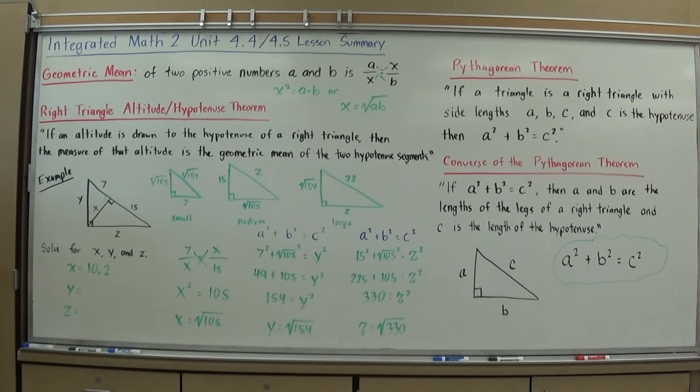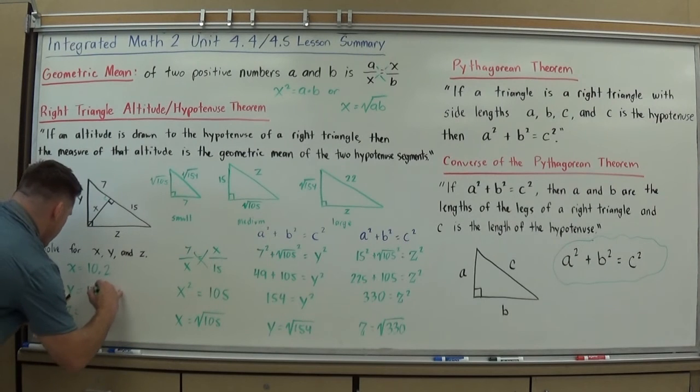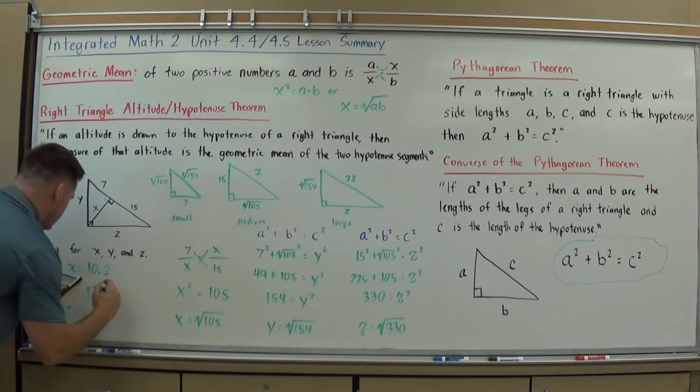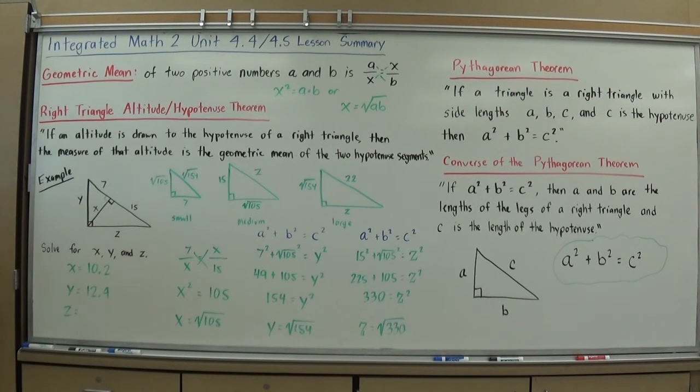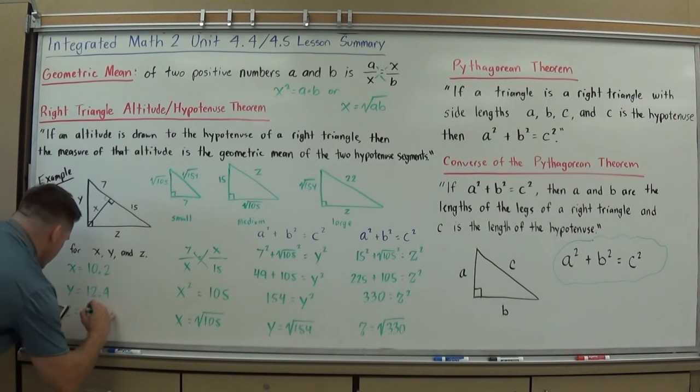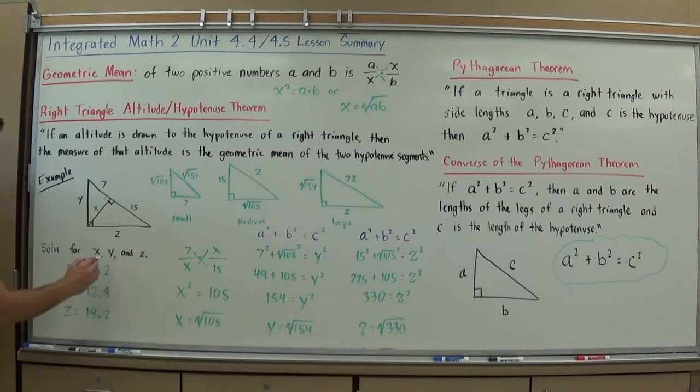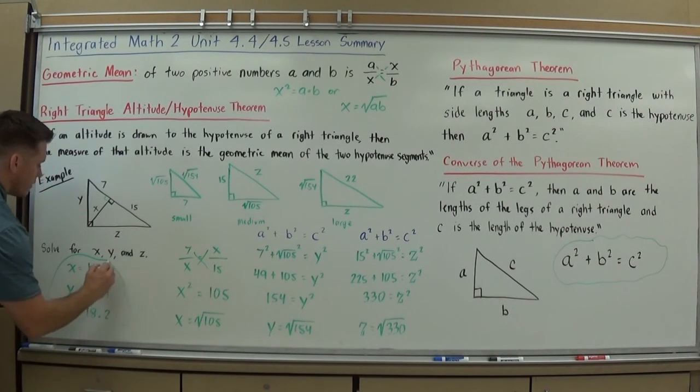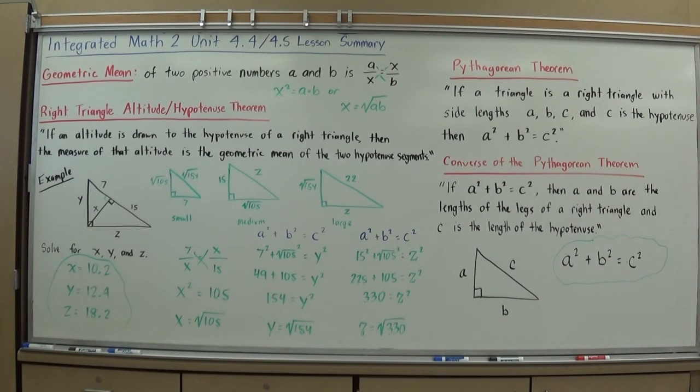Square root of 154 is 12.4 when rounded to one decimal place. And the square root of 330 is 18.16, which rounds up to 18.2. And just like that, I have all three values of that triangle.